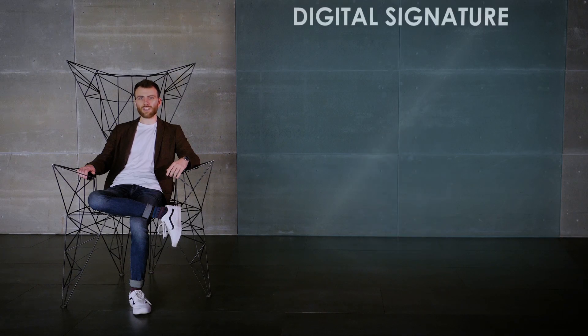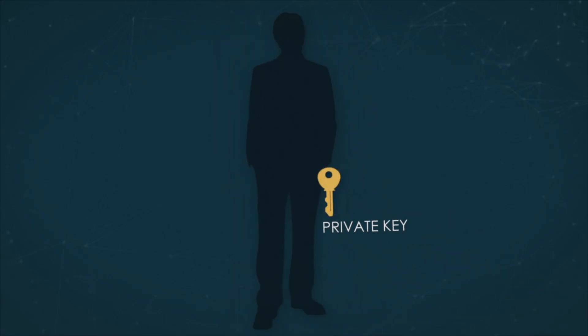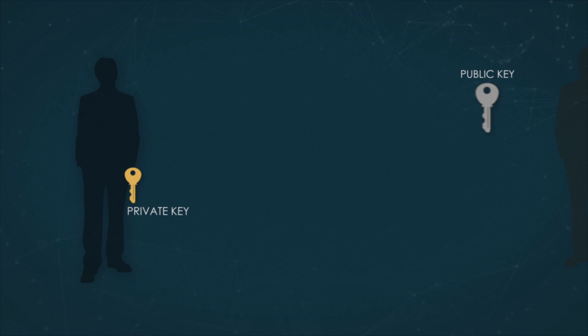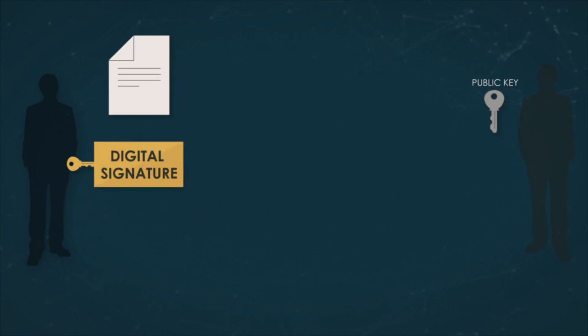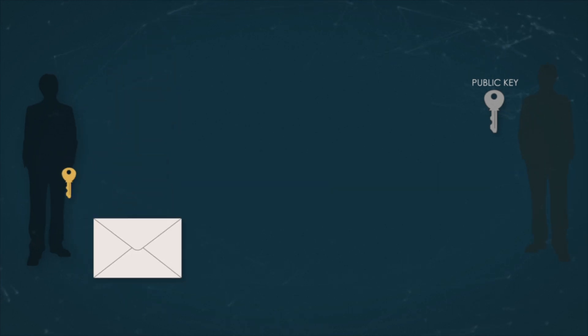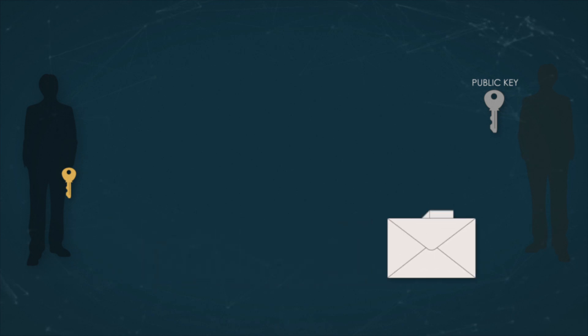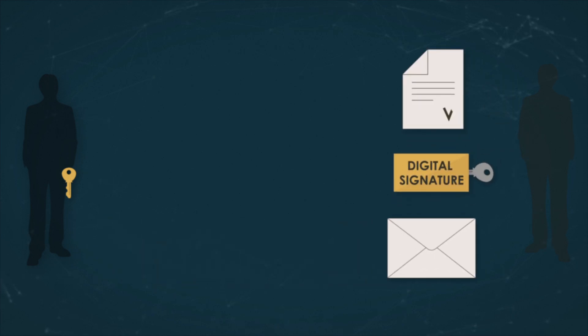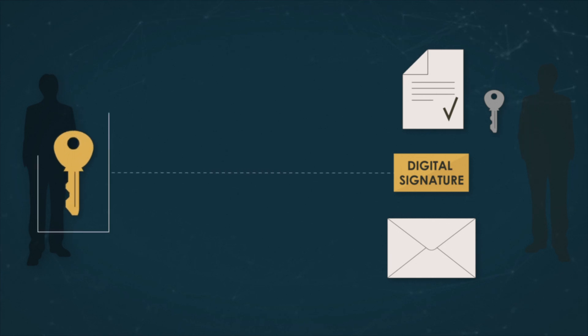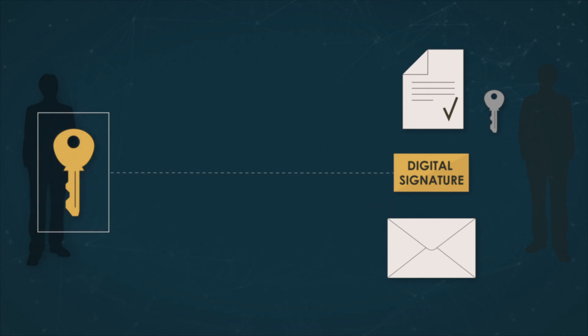The second primitive, the digital signature, was first proposed by Whitfield Diffie and Martin Hellman in 1976. It is a method of proving the authorship of a message with a pair of keys — one private and one public. Using the private key and the message, the author produces a signature that he sends along with the message. The recipient can then use the public key to verify that the signature was indeed produced from the message using the corresponding private key, ensuring the sender has the private key.